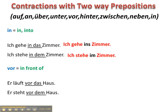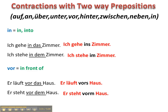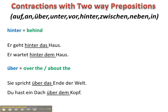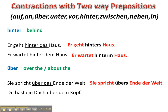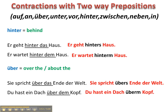Vor: Er läuft vor das Haus. Er steht vor dem Haus → Er steht vorm Haus. Hinter: Er geht hinter das Haus. Er wartet hinter dem Haus. Über: Sie spricht über das Ende der Welt. Du hast ein Dach über dem Kopf. Und das war's. Vielen Dank.